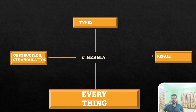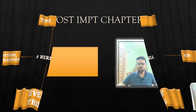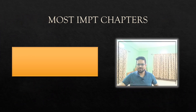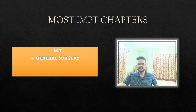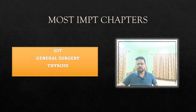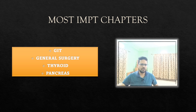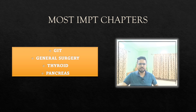Now the most important chapters in surgery that you must read thoroughly: first is GI surgery, second is general surgery which is the second most important chapter, third is thyroid — covering thyroiditis and carcinoma — and fourth is the pancreas, starting from embryological defects to acute conditions to carcinoma. Finish these four chapters first when starting surgery preparation, then move to other chapters.